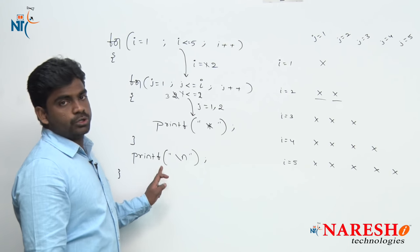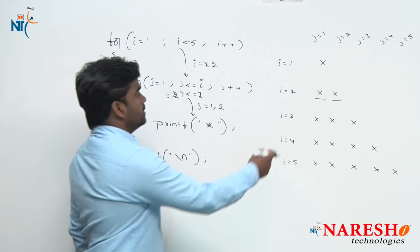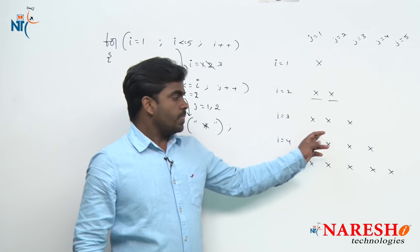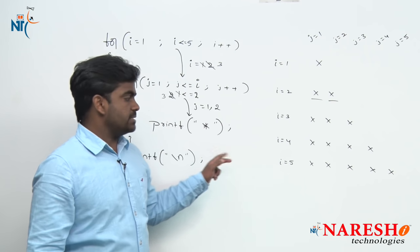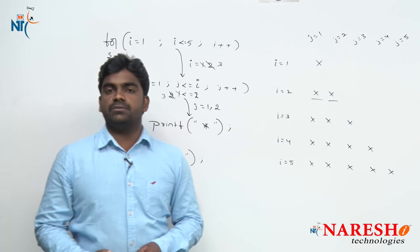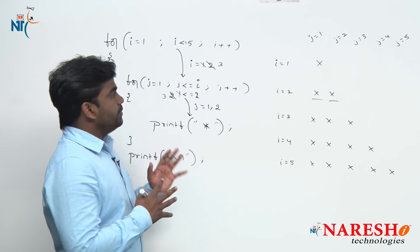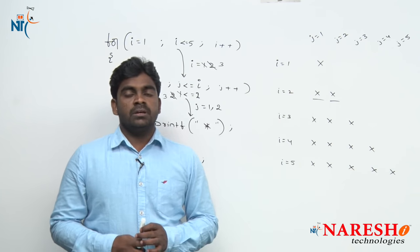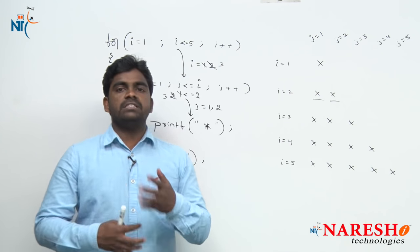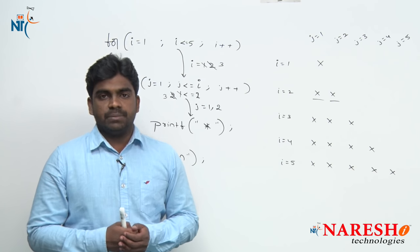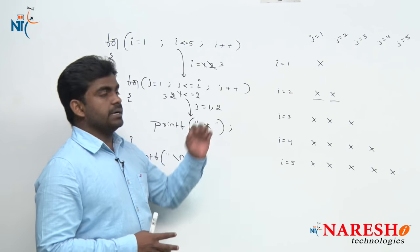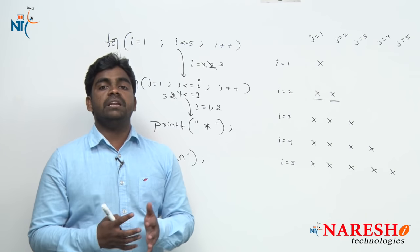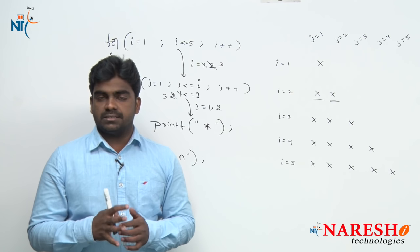Then it sends control to the new line. i becomes 3, so 3 stars print; i value 4, inner loop executes 4 times; i value 5, inner loop executes 5 times. That is how to print this simple triangle pattern. This pattern can also be printed in other ways using modify statements — increment and decrement operators — which we will see in the next session.